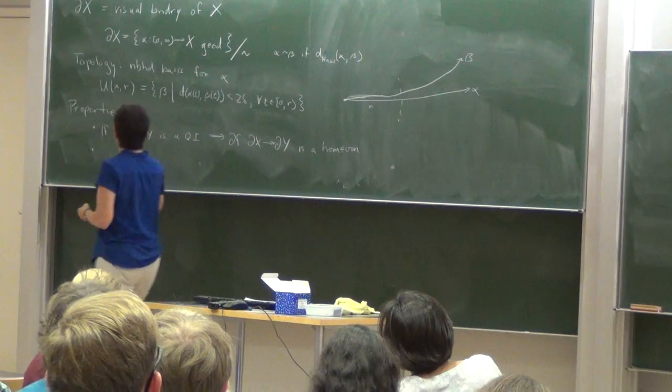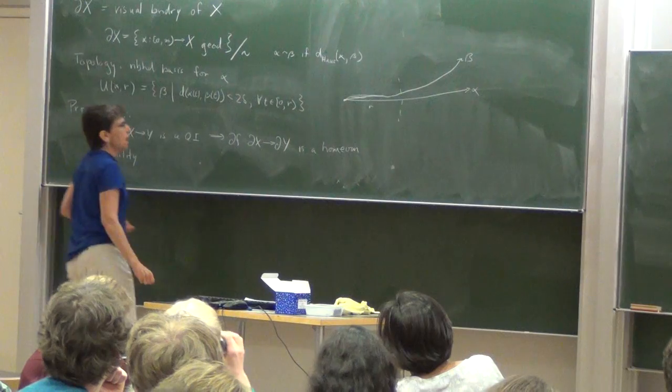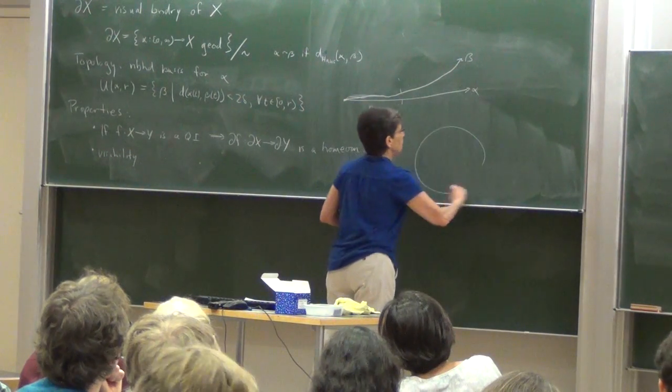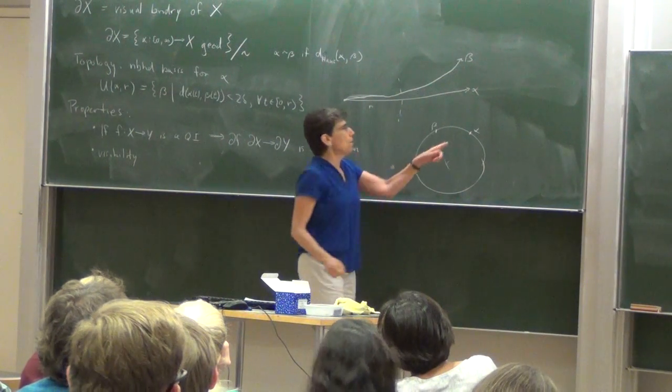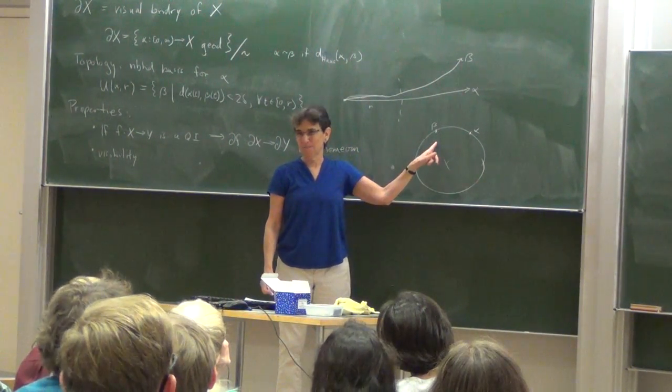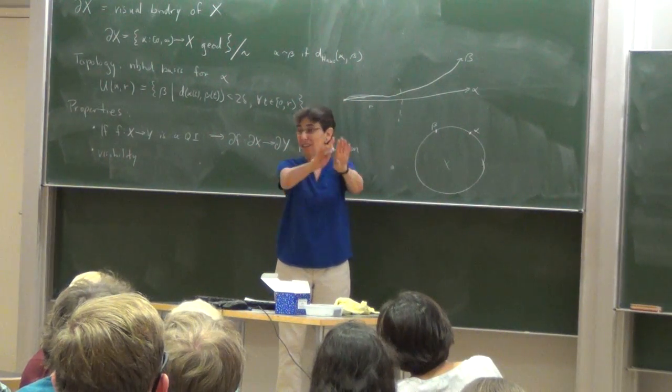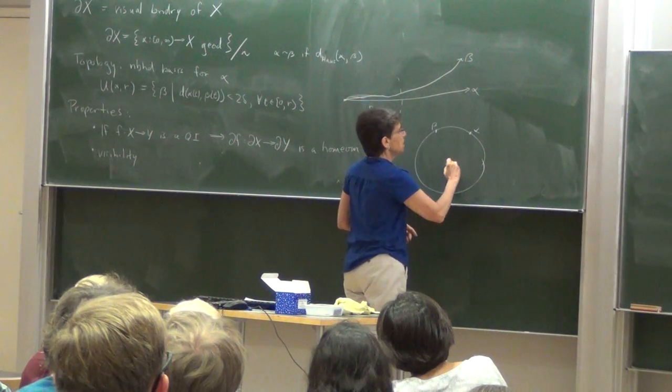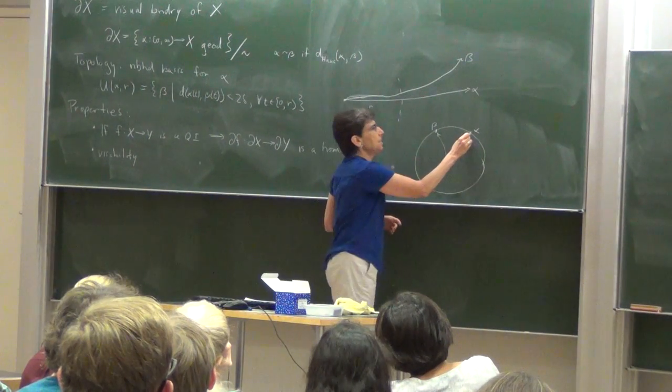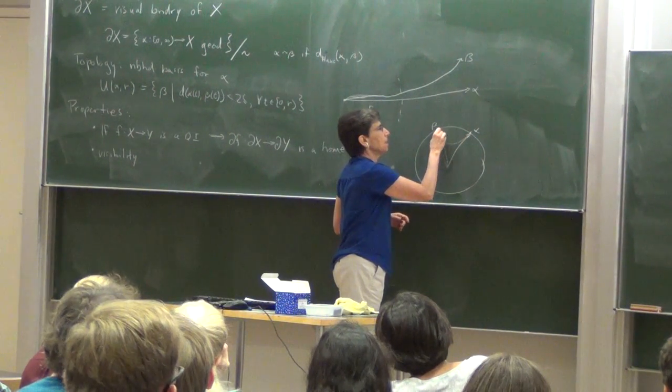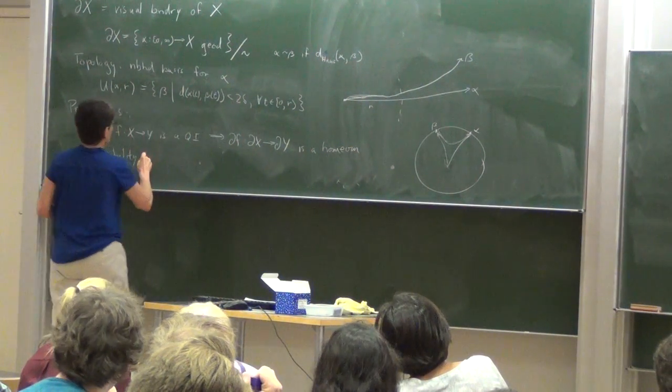There are all kinds of other properties. I'm going to just list a few that are going to come up in this talk. The second one is the property I call visibility. Supposing I'm on the boundary, I've got two points, alpha and beta on the boundary. I want to know if I'm standing at one of them, can I see the other one? Seeing means your eyesight is along geodesics. So we're asking, a priori, this is some ray to here, and this is some ray to here. And I'm asking, is there a bi-infinite geodesic that goes from here to here? Can I see one from the other?